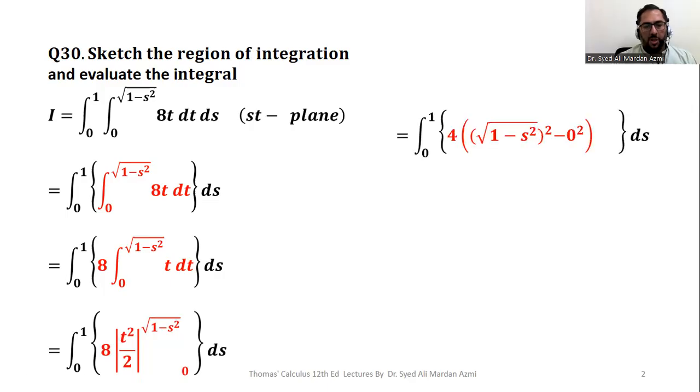In the next step, we have applied fundamental theorem of calculus and we have calculated the limits upper limit minus lower limit. We have replaced t with square root of 1 minus s square and then t with 0. This 8 and 2 will balance each other and we will get 4 after the cancellation.